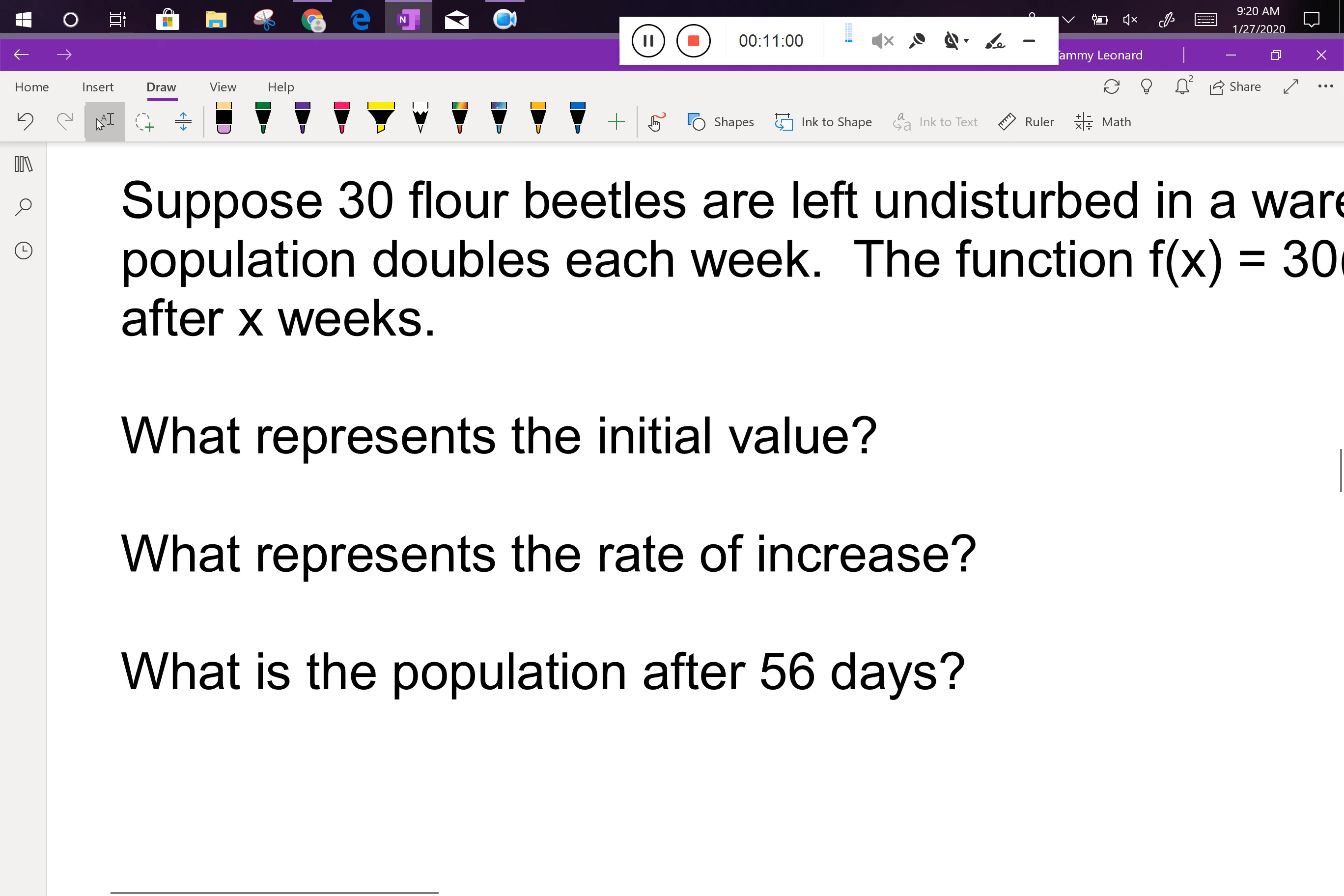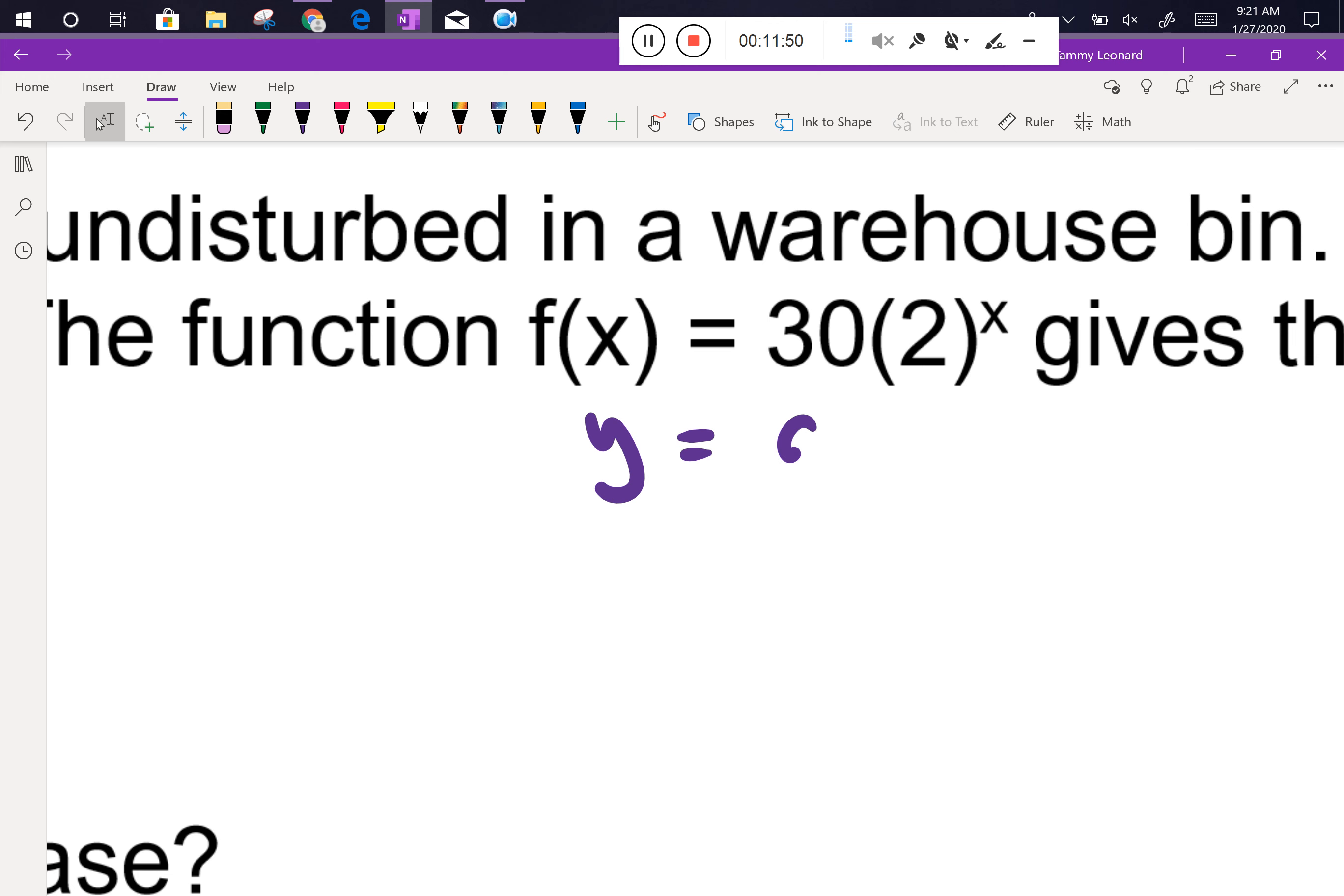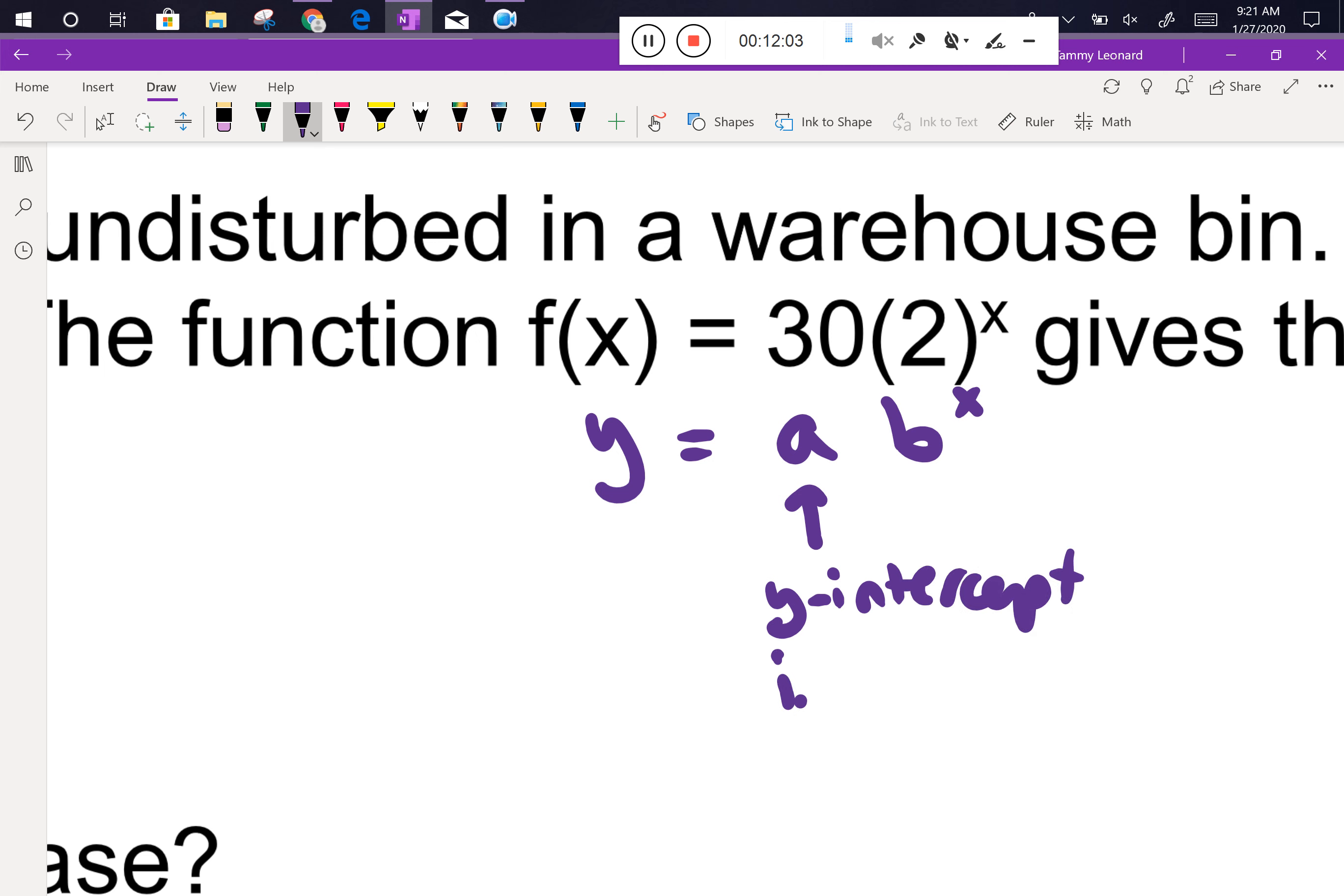So we're going to do a couple word problems today. We're also going to do a couple of testing to see if something's growth or decay. We'll see what this looks like. I'm going to skip over that for right now and we're going to look at the power beetle problem, my least favorite problem of all the problems I do in all my math classes, because personally not an entomologist, I don't like bugs. Some people do, that's awesome for them. I'm not that into bugs, but here we go. Suppose 30 flower beetles are left undisturbed in a warehouse bin. So these bugs don't have any predators and they've got lots of food. Everybody good? What's gonna happen to these bugs? Exponential growth, right? There's gonna be a lot of bugs. The beetle population doubles each week. The function f(x) = 30(2)^x gives the population after x weeks. So this is this type of formula. See how it fits the pattern y = ab^x?